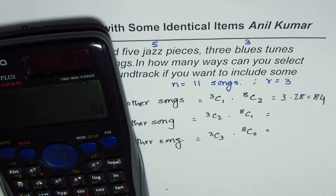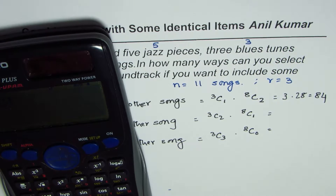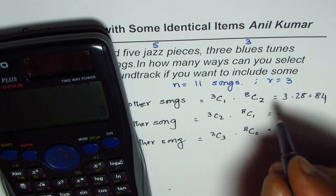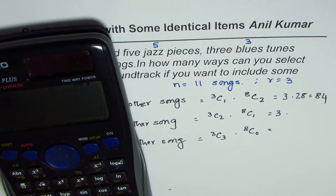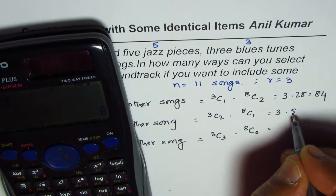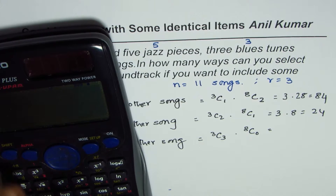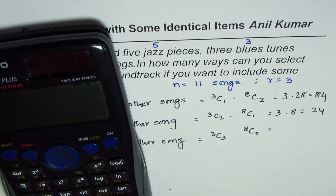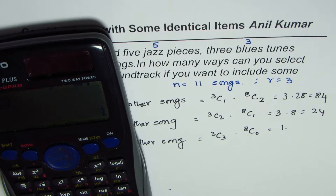The next one is 3C2, which equals 3, times 8C1, which equals 8, giving us 24. The last one is 3C3, which is of course 1.